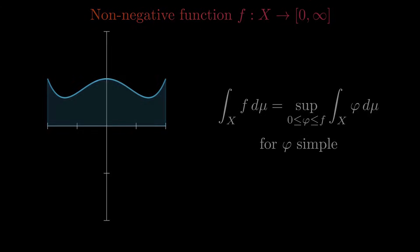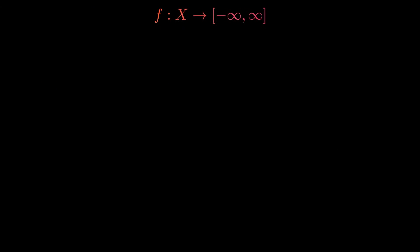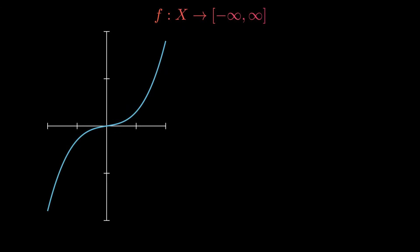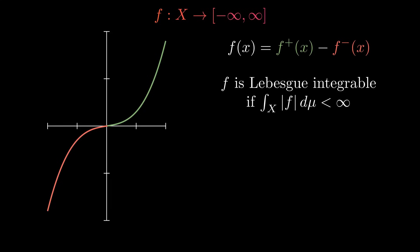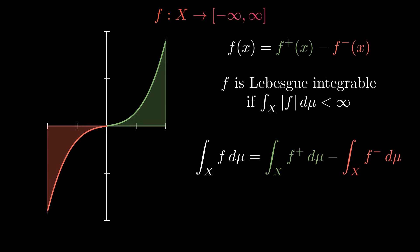Finally, we can talk about the integral of arbitrary measurable functions. To reduce this to the case of a non-negative function, we split the function into the positive and the negative part. Both of these parts are non-negative, so we can integrate them. To avoid a situation where the positive and negative parts have an infinite integral and we obtain an infinity minus infinity situation, we require that the integral of the absolute value is finite. Functions which satisfy this condition are called Lebesgue integrable. Then we define the integral of the function to be the integral of the positive part minus the integral of the negative part.